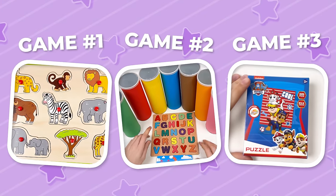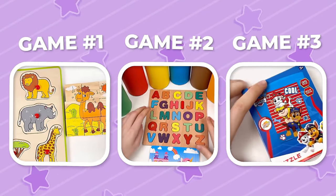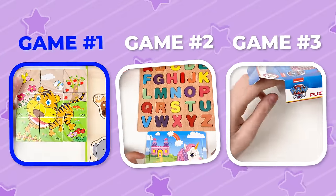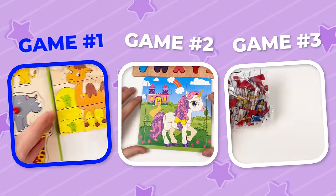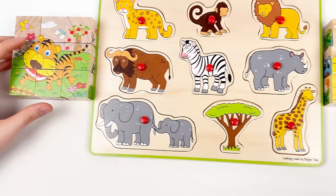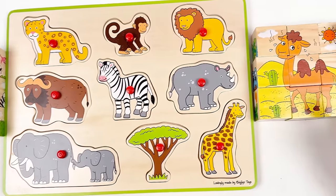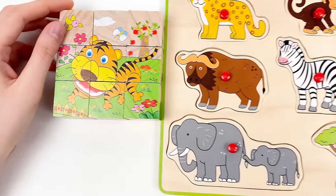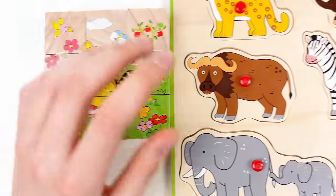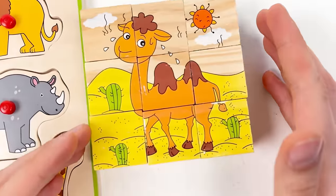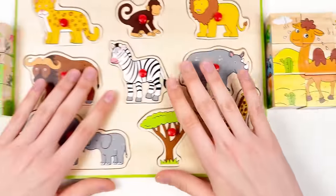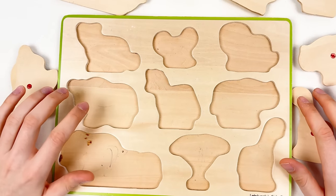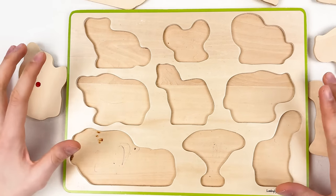Hello kids! Today we have three amazing games, so let's play our first game. Today we're going to learn about wild animals, and we have two friends with us - the tiger and the camel. Let's start with our wild animal puzzle board.